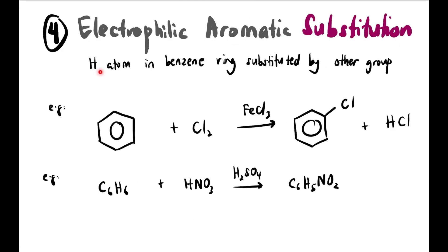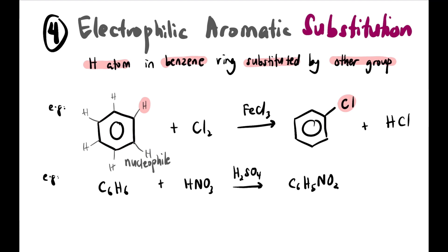The fourth reaction is electrophilic aromatic substitution. A hydrogen atom in the benzene ring is substituted by another group. In the example, one H on benzene is replaced by Cl. Benzene is electron-rich, so it is a nucleophilic site and will be attacked by an electrophile. When attacked by an electrophile, the reaction is called electrophilic aromatic substitution. FeCl3 acts as a Lewis acid catalyst here.